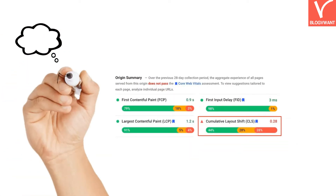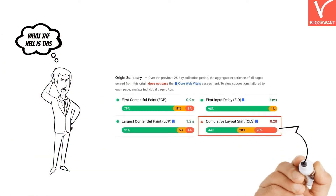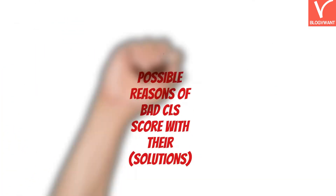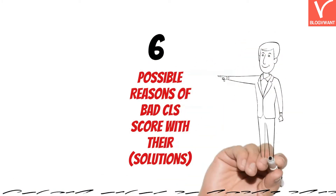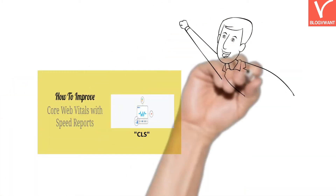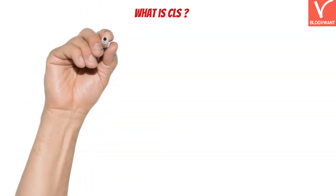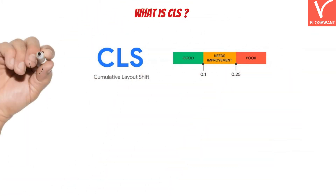Has your webpage reported more than a 0.25 CLS score in the Google PageSpeed Insights tool? If yes, then continue watching this video. Today we are going to show you the top 6 possible reasons for a bad CLS score with their solutions. CLS is one of the 3 Core Web Vitals of the Google Page Experience algorithm.